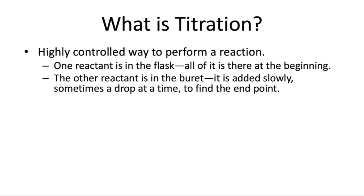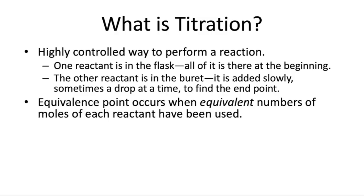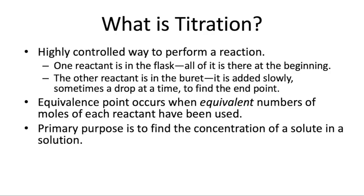So what is a titration? A titration is just a highly controlled way to perform a reaction. One reactant is in the flask or beaker, and all of it is there at the beginning. The other reactant is in something called a burette. In your experiment, you're using a modified burette made from a syringe and a stopcock. The purpose of the instrument is the same: to add something dropwise in order to find the endpoint, which is when you've completely neutralized your acid or base. At the endpoint or equivalence point, in the case of an acid-base reaction, we have equivalent numbers of moles of each reactant, according to the stoichiometry in the balanced chemical equation.